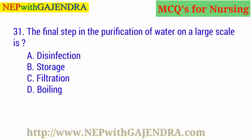The final step in the purification of water on a large scale is: A. Disinfection. B. Storage. C. Filtration. D. Boiling. The right answer is A: Disinfection.